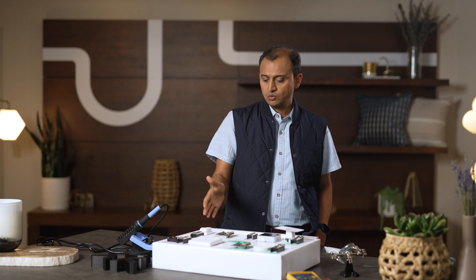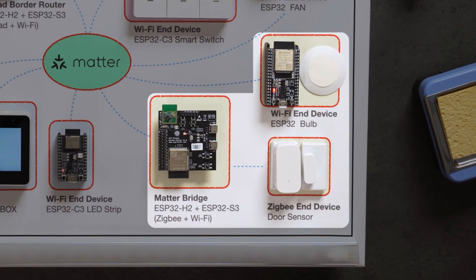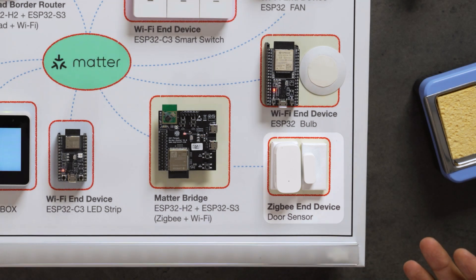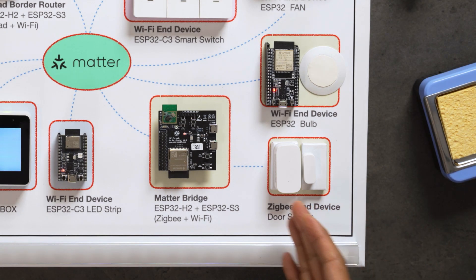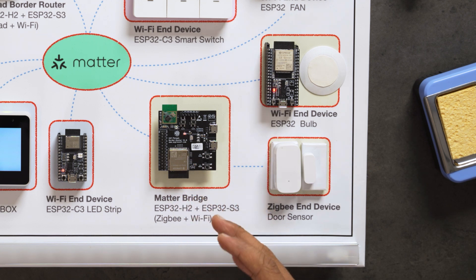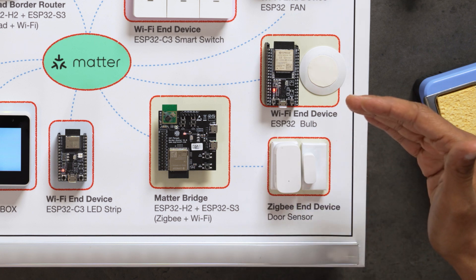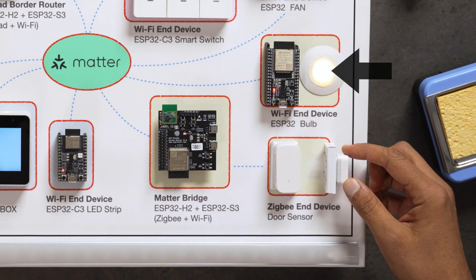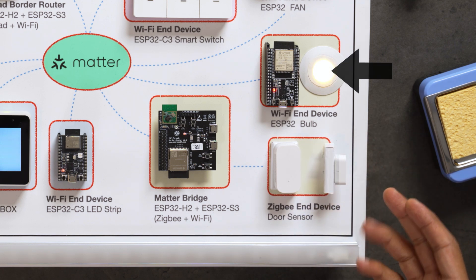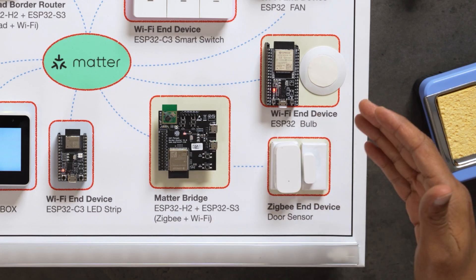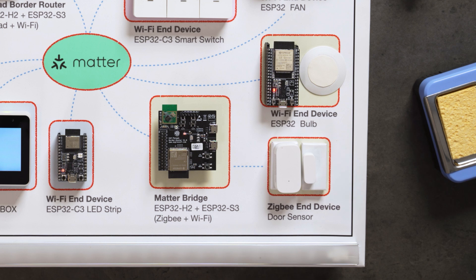Moving on, we'll now look at the Matter bridge. Here we have a door sensor which is a typical off-the-shelf Zigbee door sensor. It is part of the Matter network through this Matter bridge, and in this case it will be controlling this light which is a Wi-Fi light. As I open the door it will switch on the light, and as I close the door it will switch off the light. In this case the communication has happened through the Matter bridge, again completely over Wi-Fi.